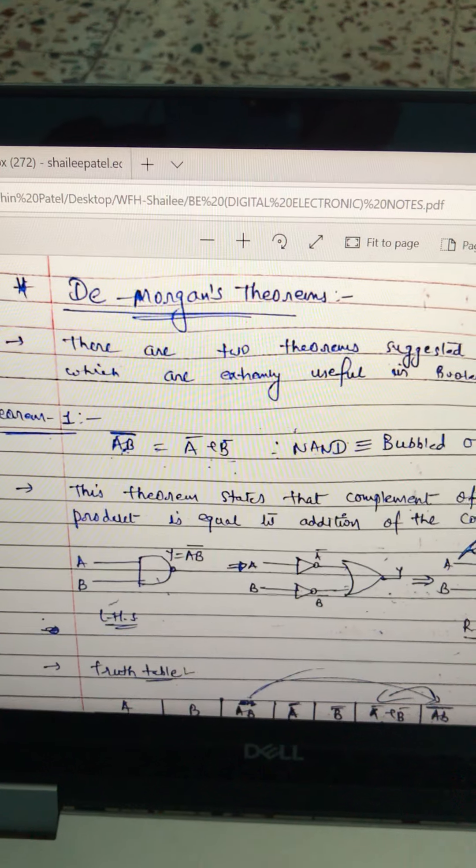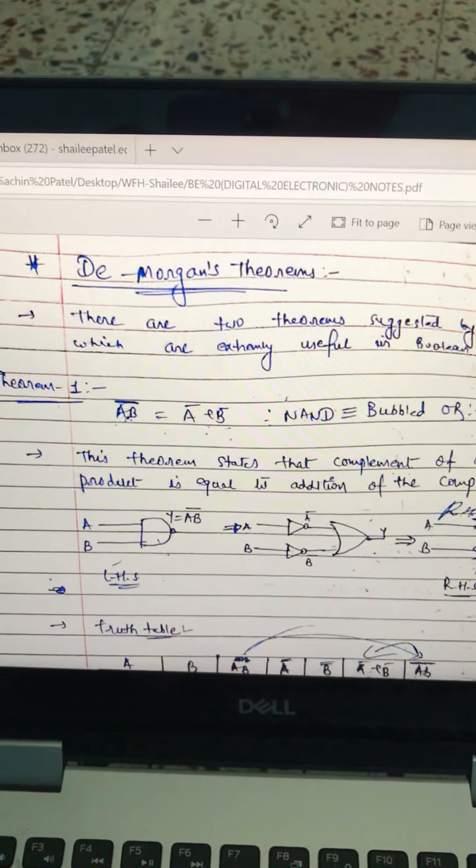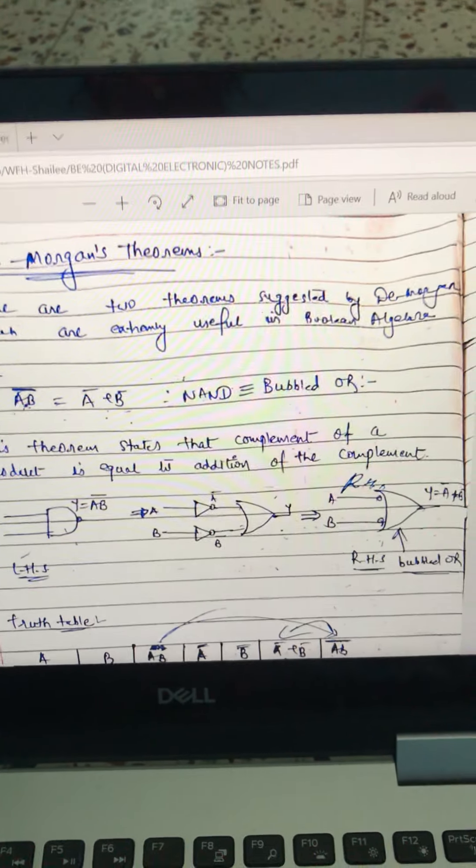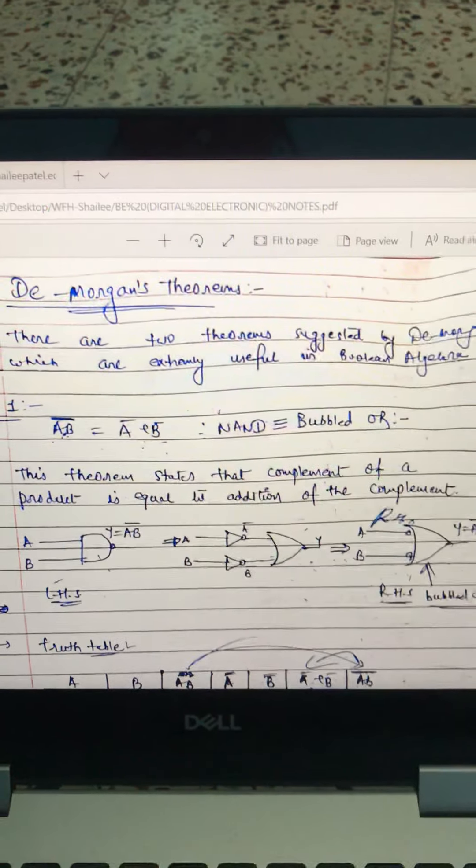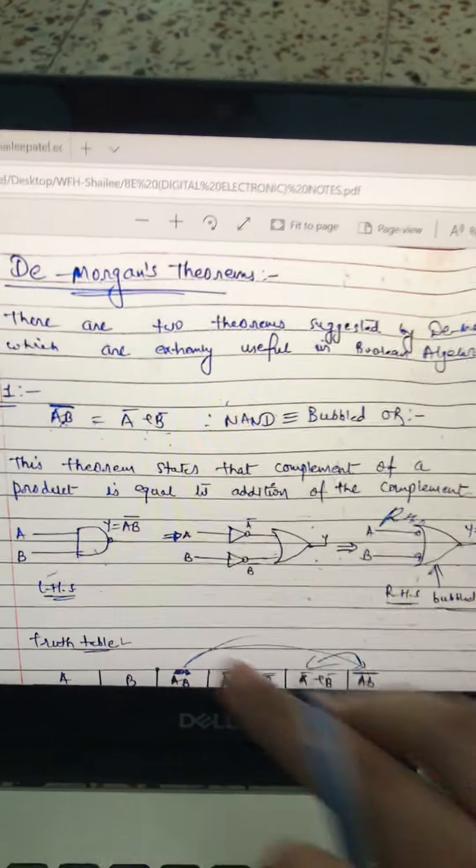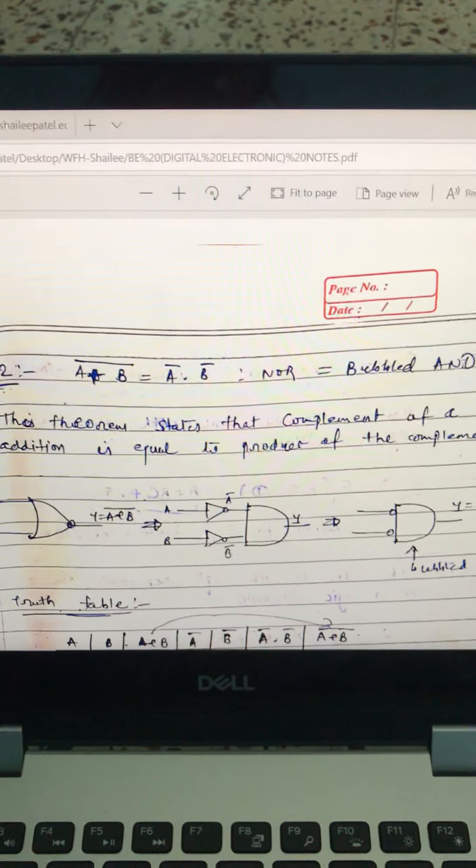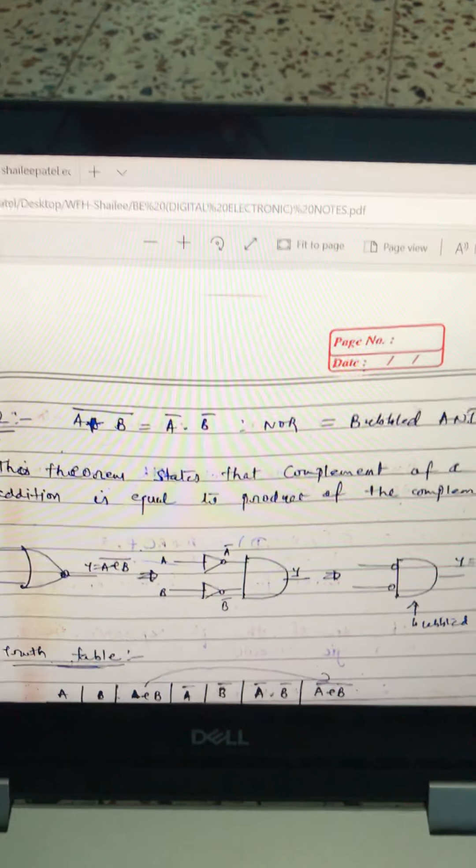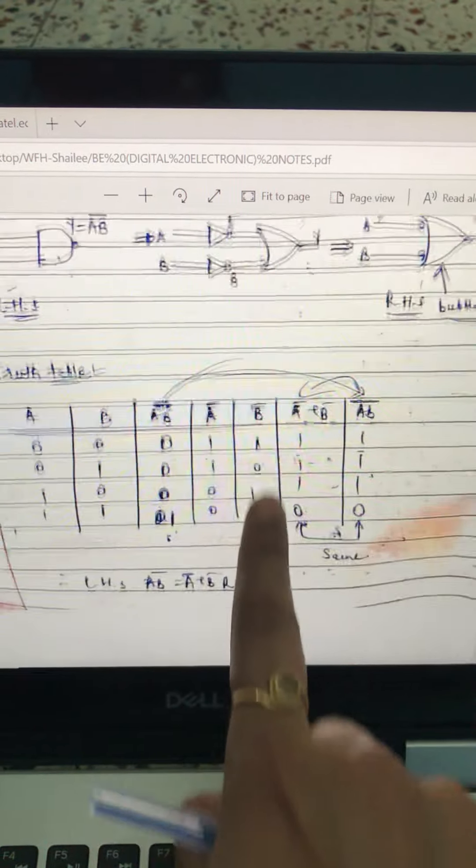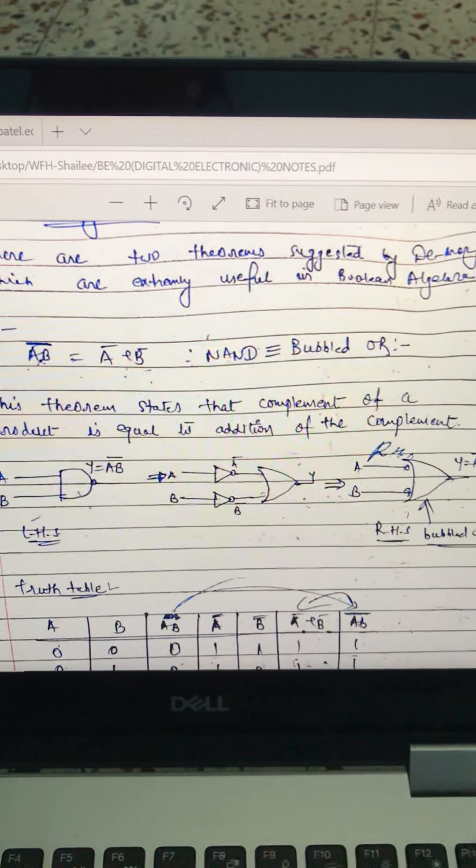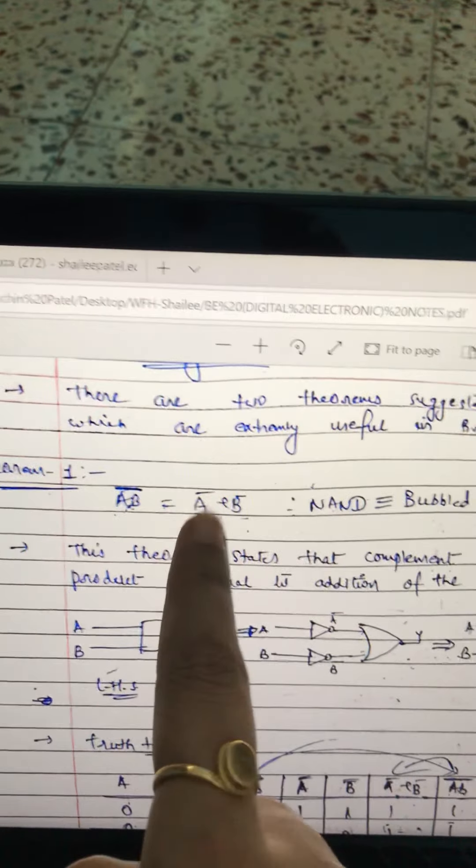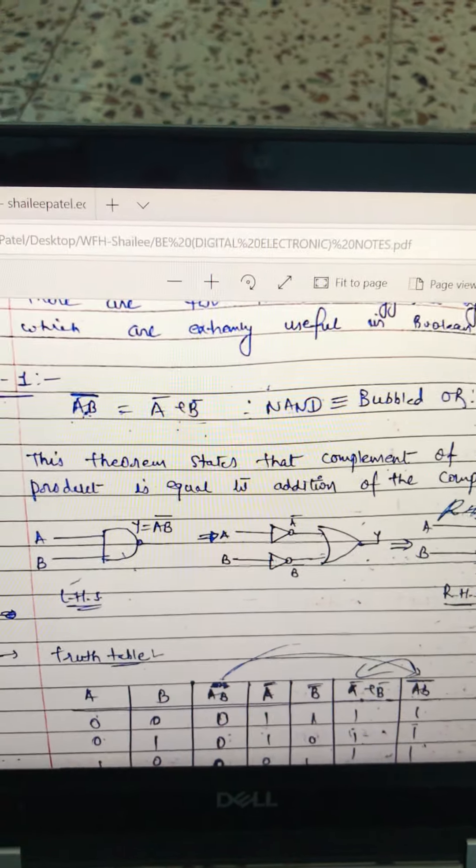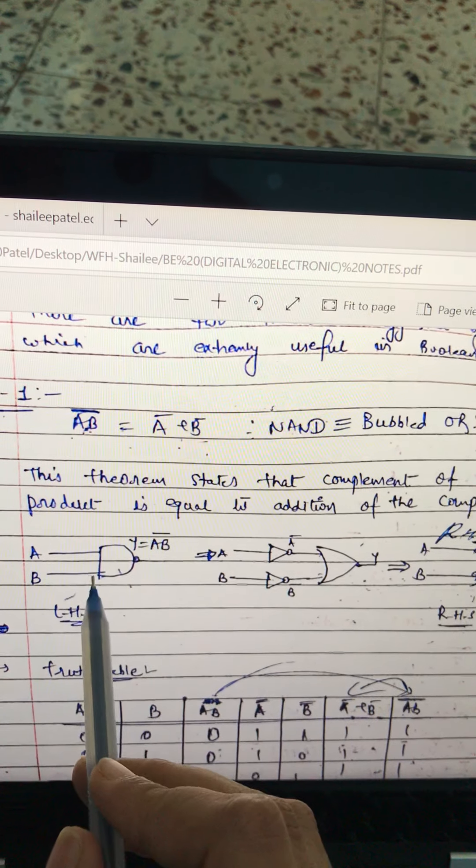So the first theorem states that complement of a product is equal to addition of the complement. Now let's see what it shows us. You need to prove this with the help of truth table. But before that De Morgan shows us some gates. Let's put this is NAND gate.